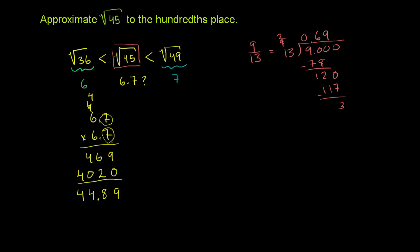So let's try 6.71. Let me do this in a new color. I'll do 6.71 in pink. So let's try 6.71. Increase it a little bit. See if we can go from 44.89 to 45. Because this is really close already. So once again, we have to do some arithmetic by hand.